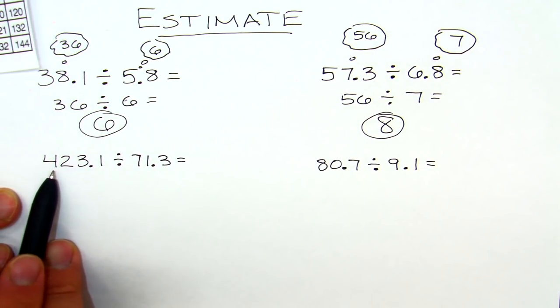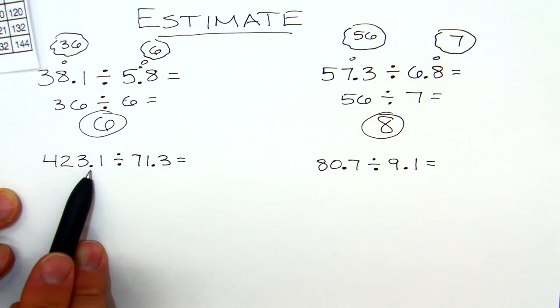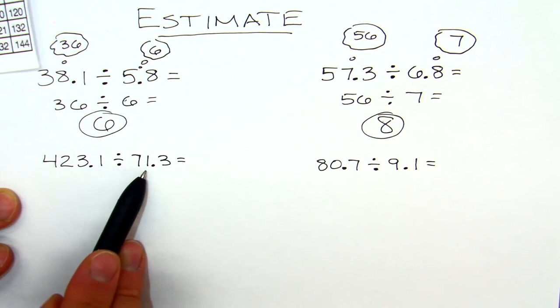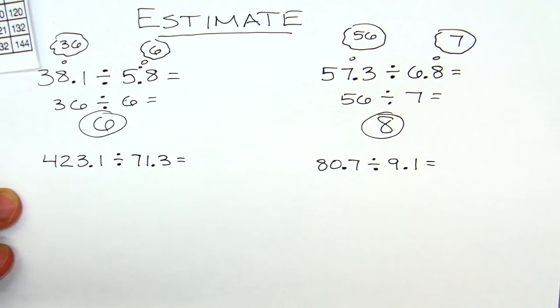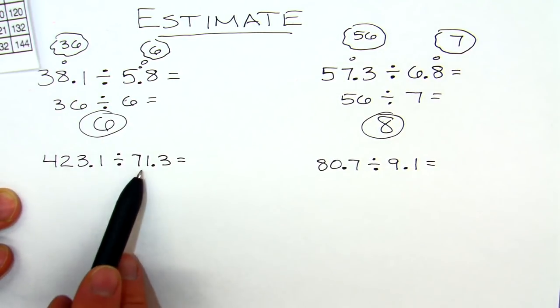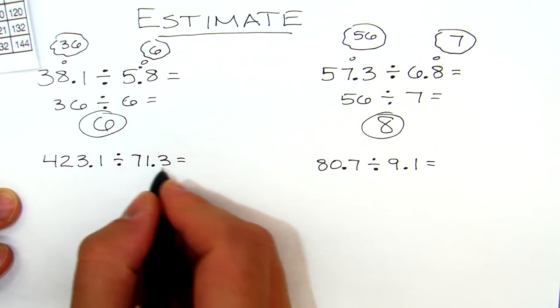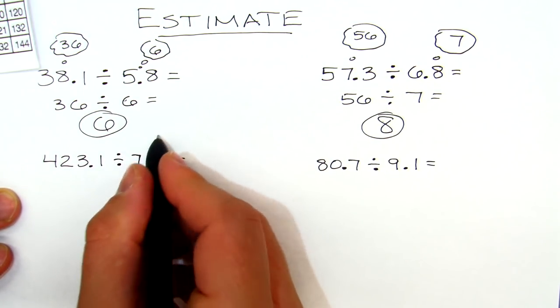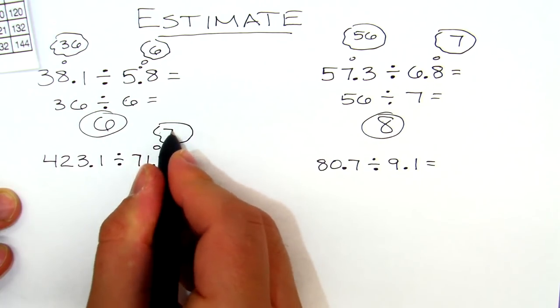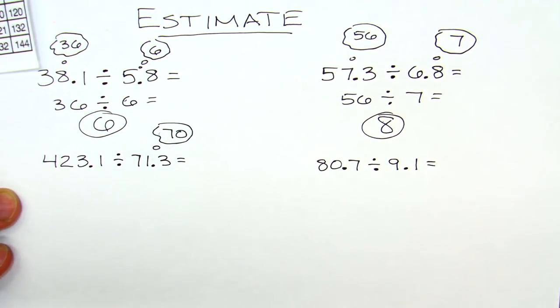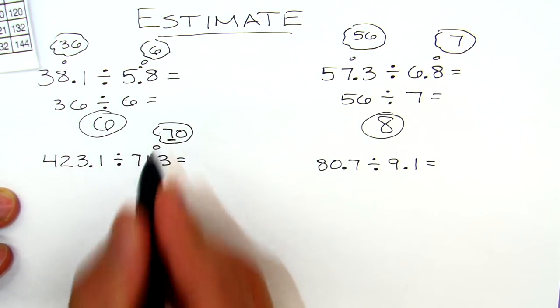Now in this one, 423.1 divided by 71.3. Well I don't know about you, but I don't know my 71 times tables. So what I'm gonna do is round this - 71 is very close to this landmark number of 70, but I don't know my 70 times table, so I'm gonna focus on this 7.